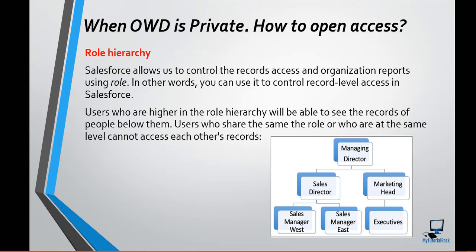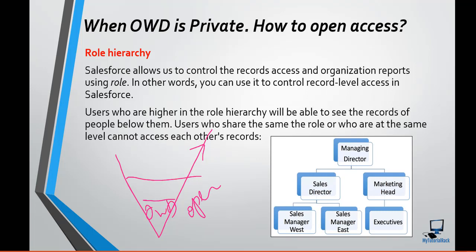When OWD is set to private, how are you going to open up the access? If you remember the diagram that we talked about earlier, we had this V diagram. At the bottom of this diagram we had OWD, which is used to restrict the access. Then above the OWD we had roles, above the roles we had sharing rules, and above the sharing rule we had manual sharing. This is how you open up the access.